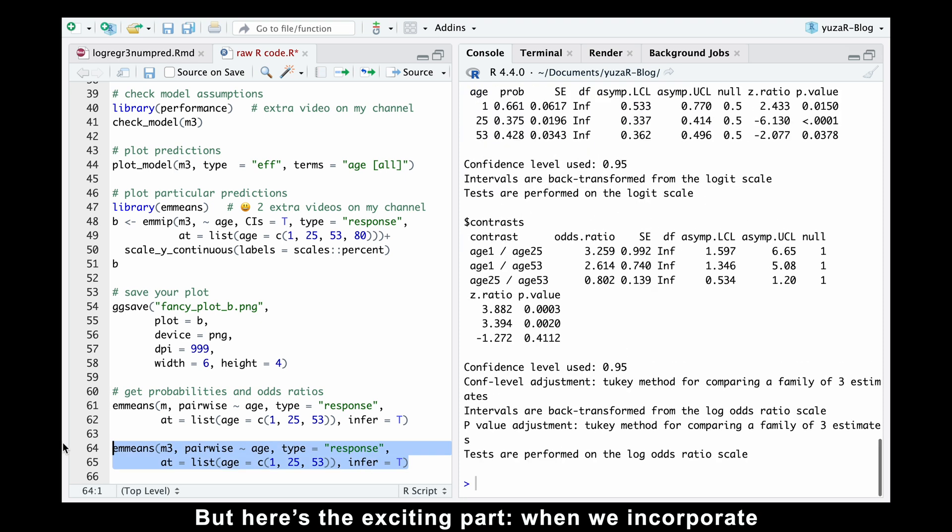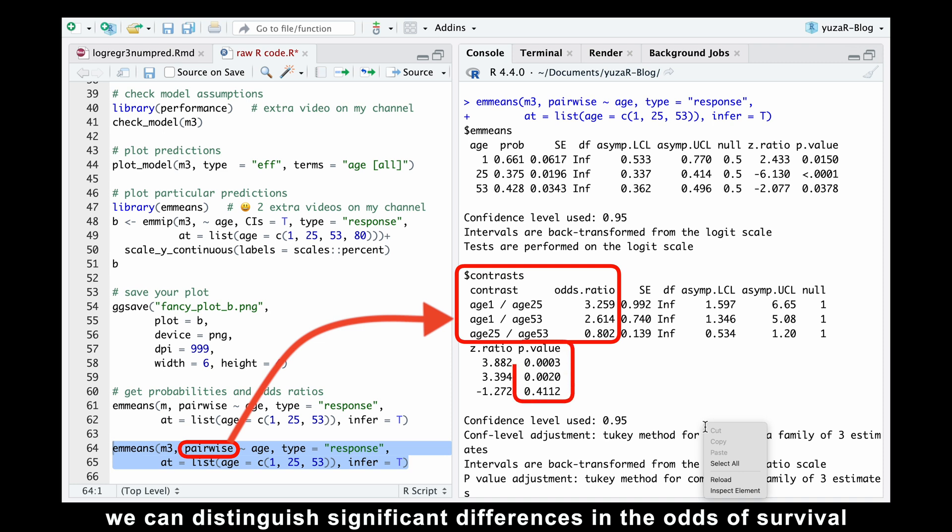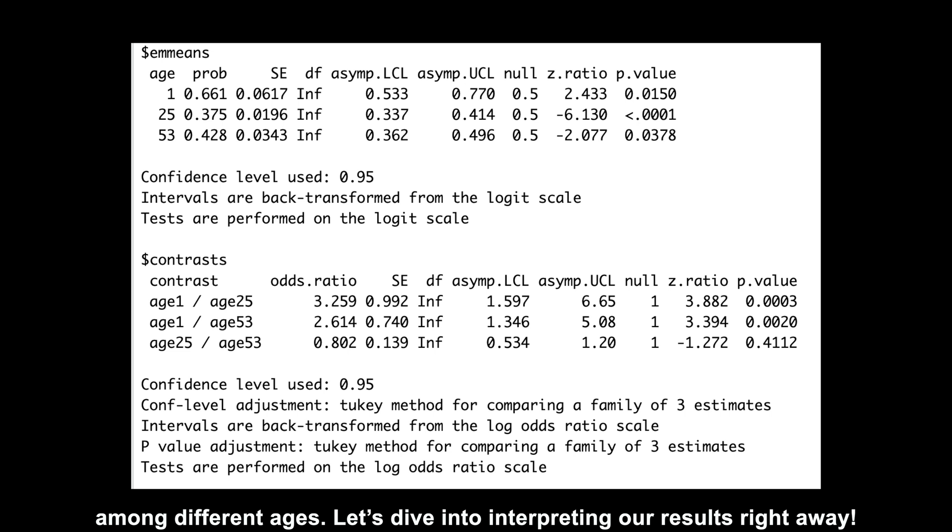But here is the exciting part. When we incorporate polynomial degrees into our model, we can distinguish significant differences in the odds of survival among different ages. Let's dive into interpreting our results right away.